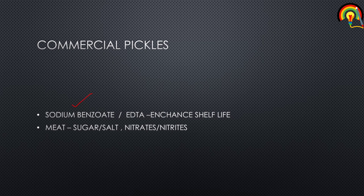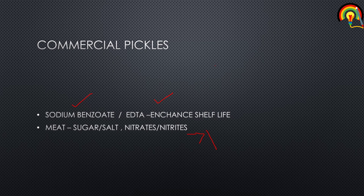In commercial pickles, two agents are used: sodium benzoate and EDTA, which enhance shelf life. Meat is cured with sugar, salt, or a combination of both. Meat is also preserved using nitrates or nitrites, which contribute to the pink color of meat and also inhibit Clostridium botulinum. Sauerkraut and kimchi are also known as commercial pickles.